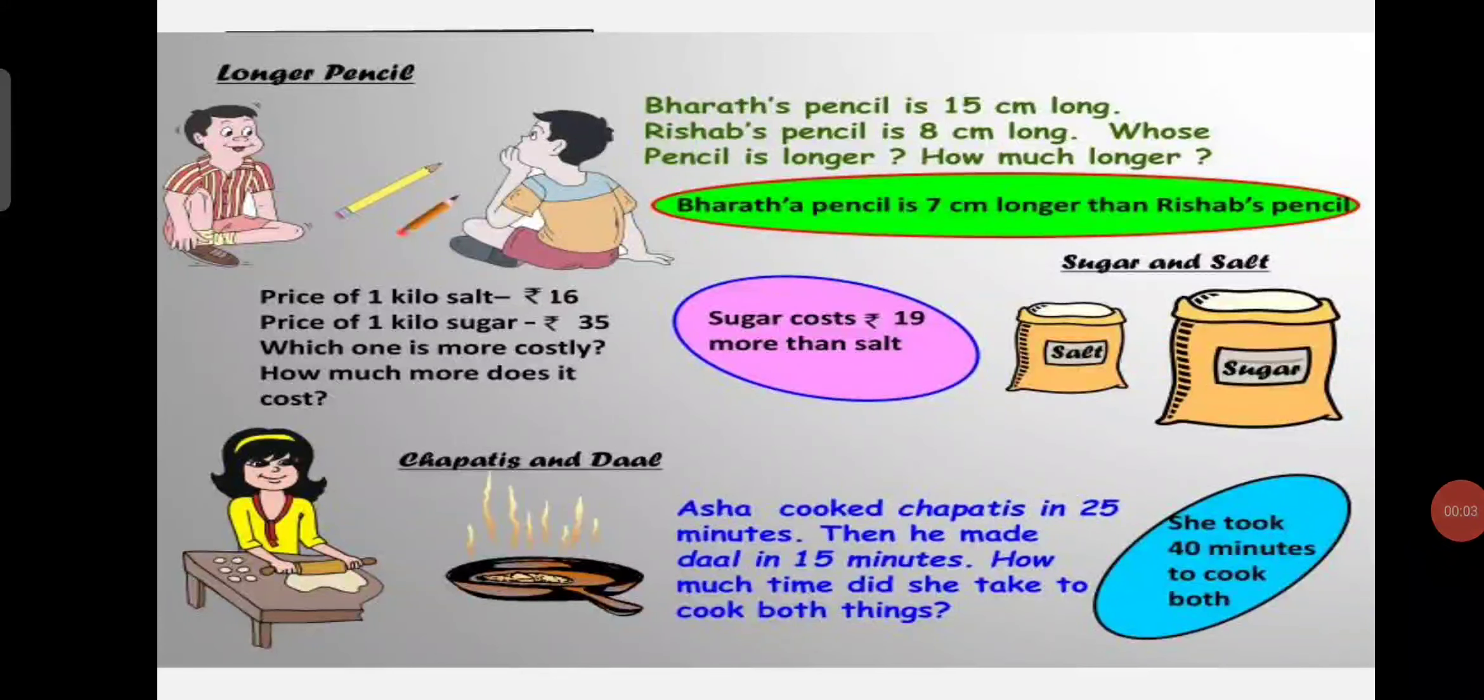We can give some day-to-day questions also so the child is able to correlate the learned concept. Bharat's pencil is 15 cm long, Rishabh's pencil is 8 cm long. Whose pencil is longer? How much longer? The child is able to compare by seeing the numbers. Bharat is having 15 cm long pencil and Rishabh is having 8 cm long. The number is enough to compare that Bharat is having the longer one, but how much longer? When he performs the subtraction, he will get 7 cm long.